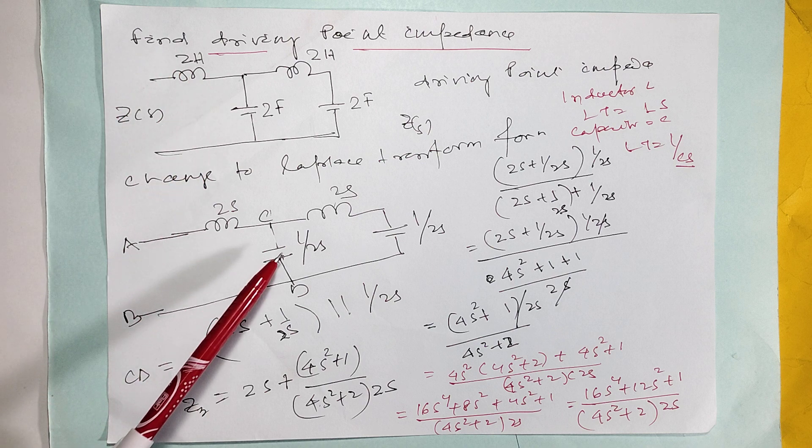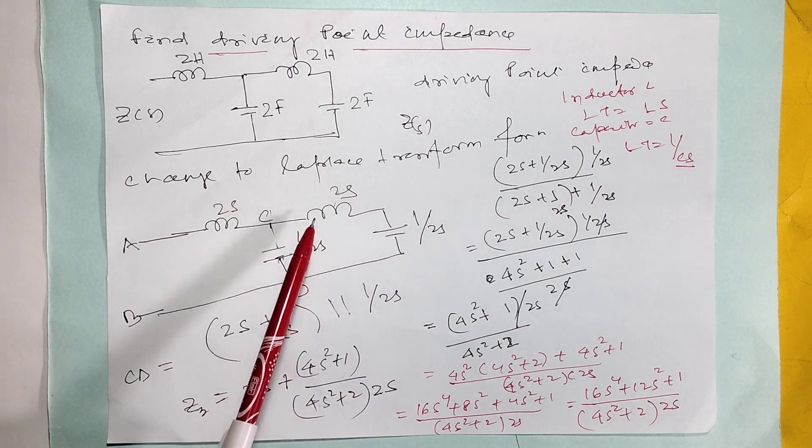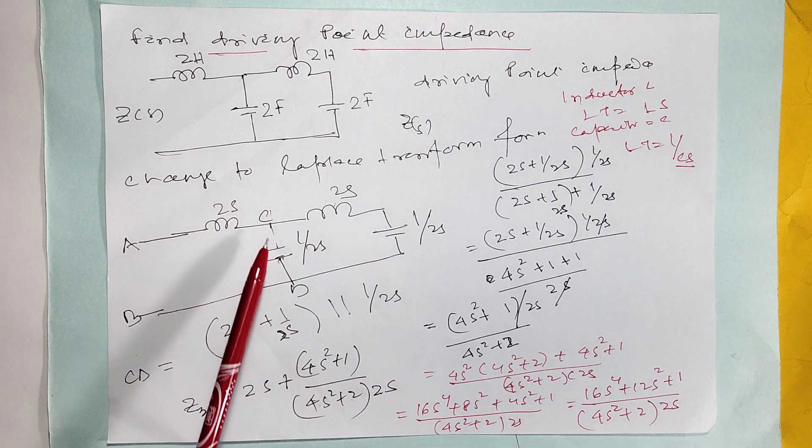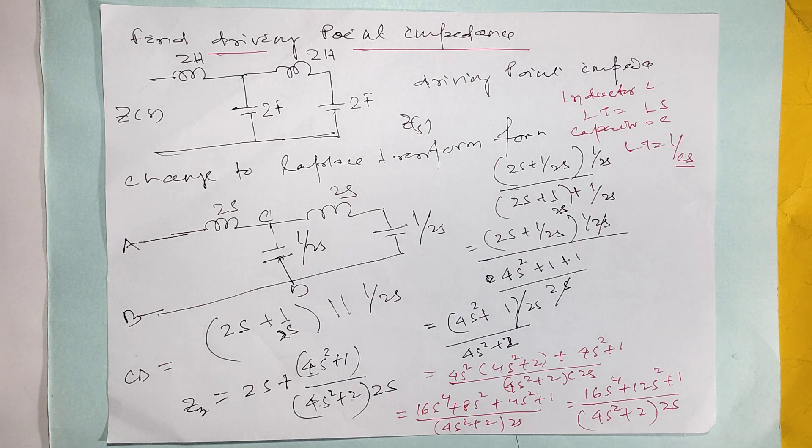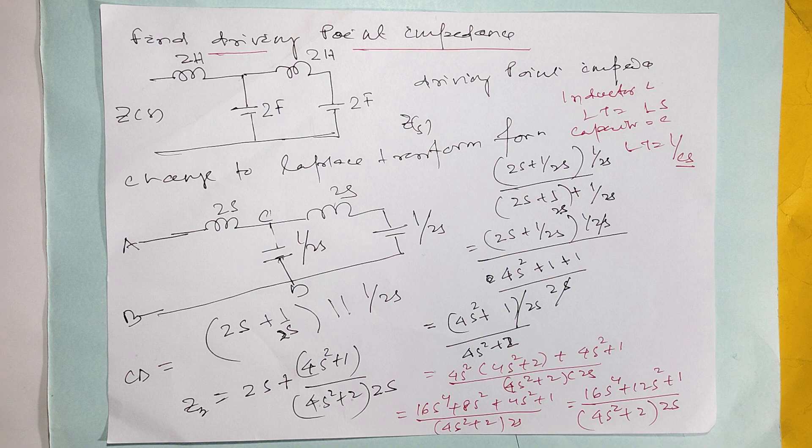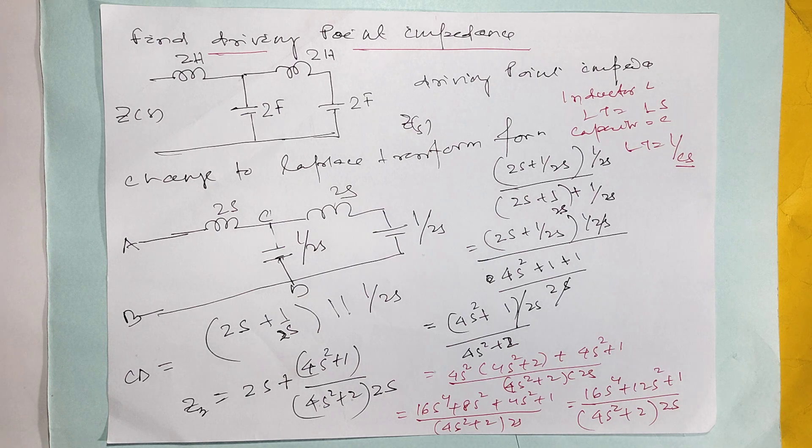So change to 2s, 1 by 2s. The answer will come: 16s to the power 4 plus 12s squared divided by 4s squared plus 1 is equal to 4s squared plus 2 into 2s. This is the answer completed.